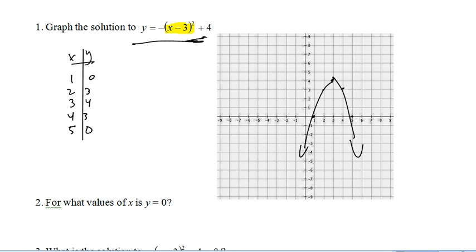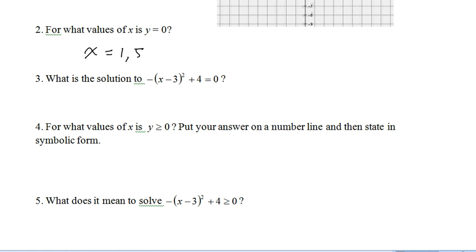Okay, so for what values of x is y equal to 0? Well, when y equals 0, it's going to be there and there. So, x is going to equal 1 and 5 when y equals 0. Notice that when y equals 0, our equation turns into this. So, there's our solutions. x equals 1 and 5.